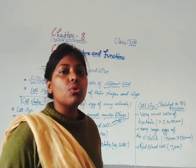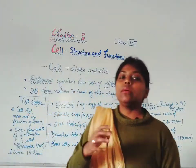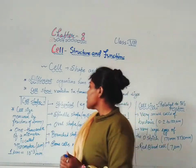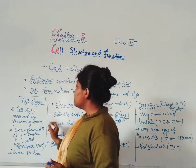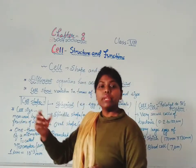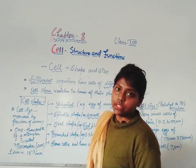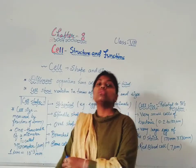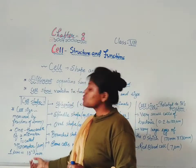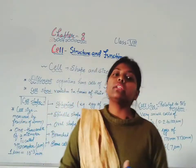Now, how do we measure cell size? What is the unit of cell size? We measure the cell size in fractions of a millimeter. We measure in one-thousandth of a millimeter, which is called the micrometer. One micrometer is equal to 10 raised to the power minus 3 mm. So, cell size is measured in micrometers.